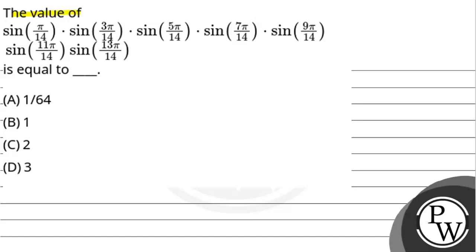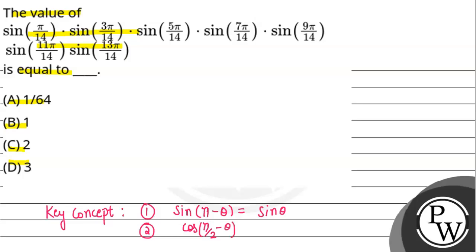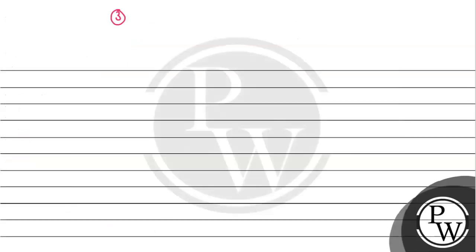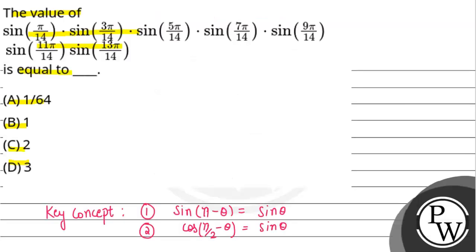Let's solve this question. The key concept uses the formulas: sin(π − θ) = sin θ, because sine is positive in the second interval; cos(π/2 − θ) = sin θ; and 2 sin A cos A = sin 2A. The given expression involves sin(π/14), sin(3π/14), sin(5π/14), sin(7π/14), sin(9π/14), sin(11π/14), and sin(13π/14).